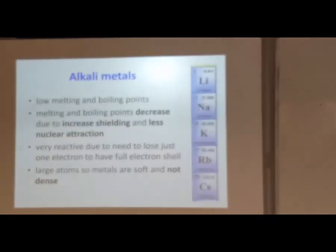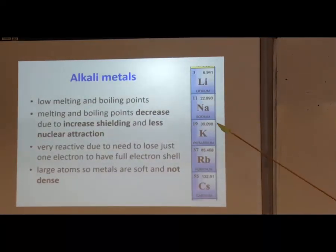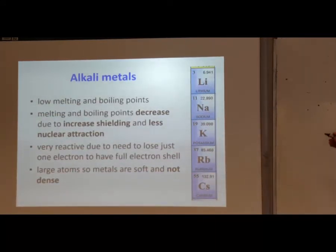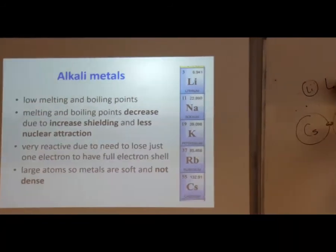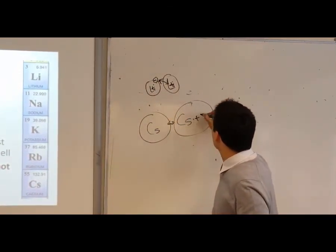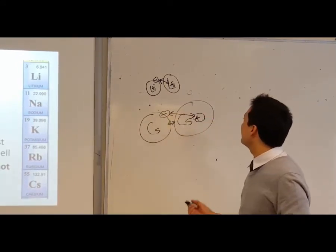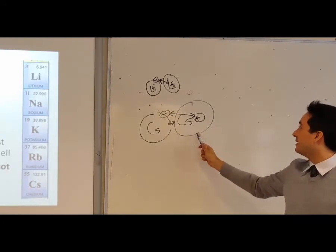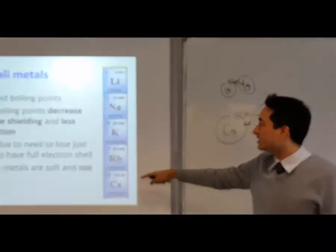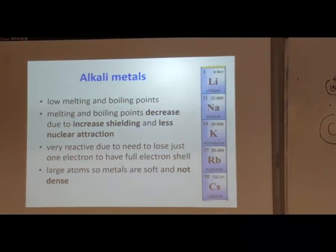Alkali metals — why does the boiling point decrease going down the group? Because there's a huge electron shell over here. The smaller atoms are more compact and stick together better. The larger atoms, like cesium, don't stick together as well because the distance between the positive nucleus and the outer electrons is much greater. For lithium, the nucleus-to-outer-electron distance is quite short and strong, but for cesium that attraction is over a large distance, so it's not very dense and the boiling and melting points are much lower.